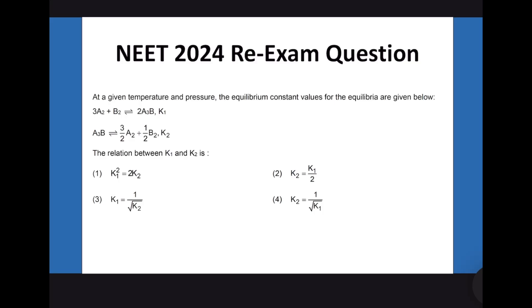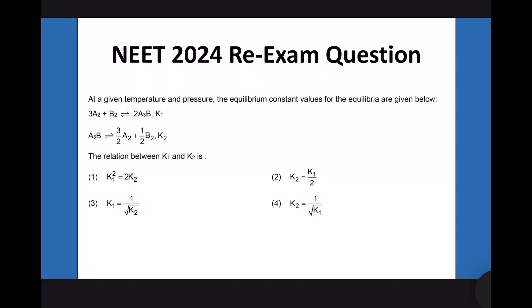Here is a question from chemical equilibrium. The equilibrium constant values for two different equilibria are given at a given temperature and pressure, and the question is about what would be the relation between k1 and k2.